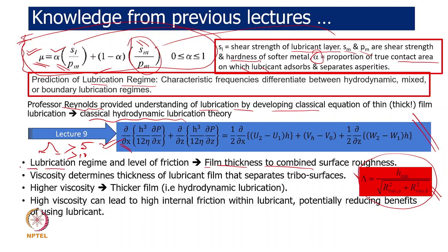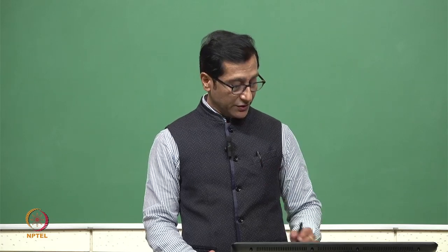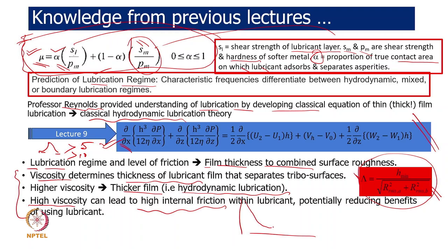In the hydrodynamic region, viscosity plays the major role in determining film thickness separating the two surfaces. However, very high viscosity also increases internal friction — the coefficient of friction depends on viscous shear. The Stribeck curve shows that coefficient of friction decreases then increases as specific film thickness increases. Optimization should target the minimum of this curve, and iterations may be needed to confirm the operating region.